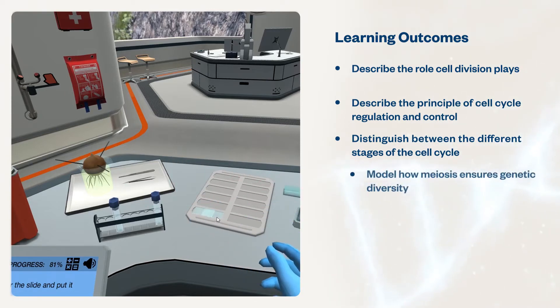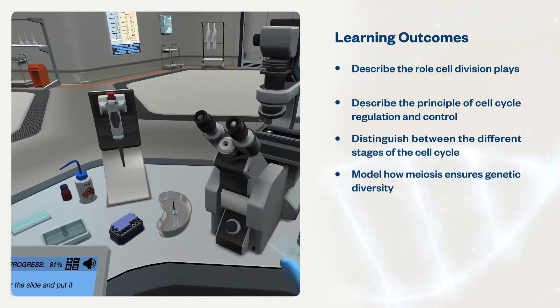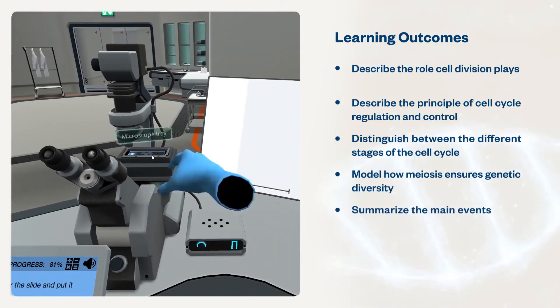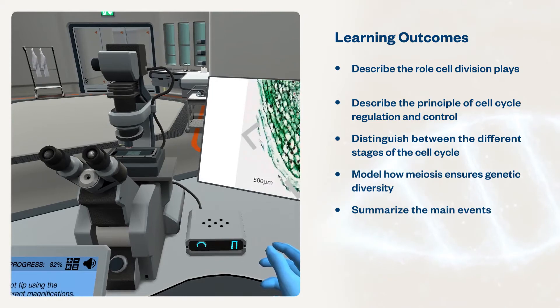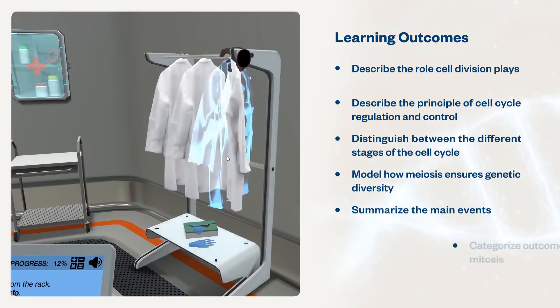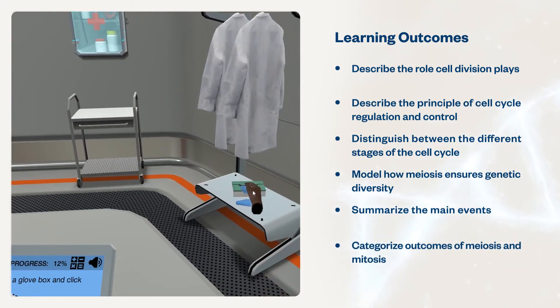Students will also model how meiosis ensures genetic diversity, summarize the main events that occur in the sequential phases of mitosis and meiosis, and categorize the outcomes of meiosis and mitosis.